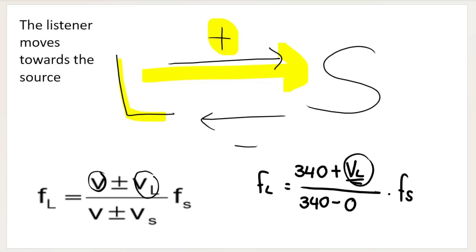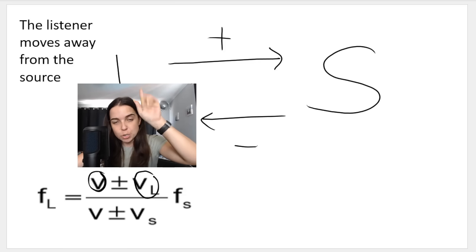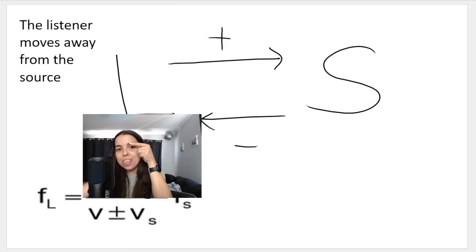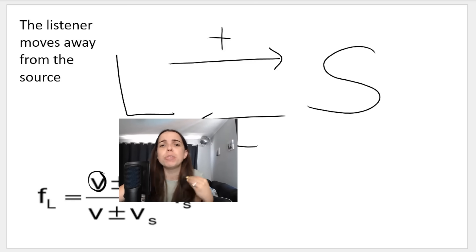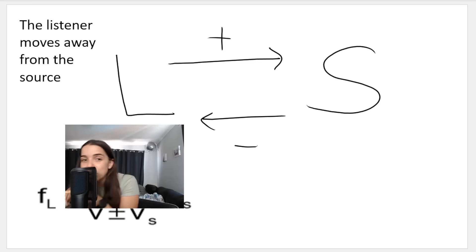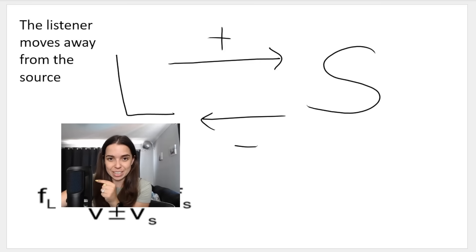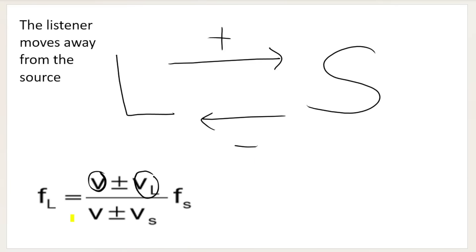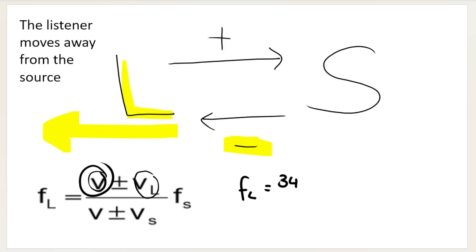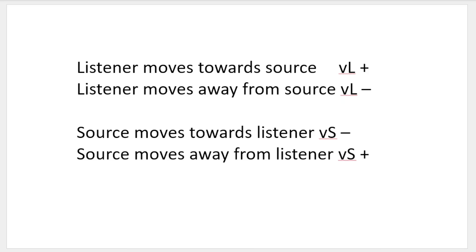If you prefer to memorize it manually: if the listener moves towards the source, VL is plus. If the listener moves away, VL is minus. If the source moves towards the listener, VS is minus. If the source moves away, VS is plus. It's always the velocity of whichever one is moving that gets the sign.